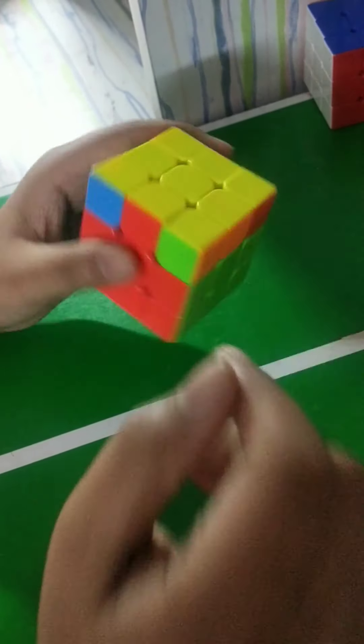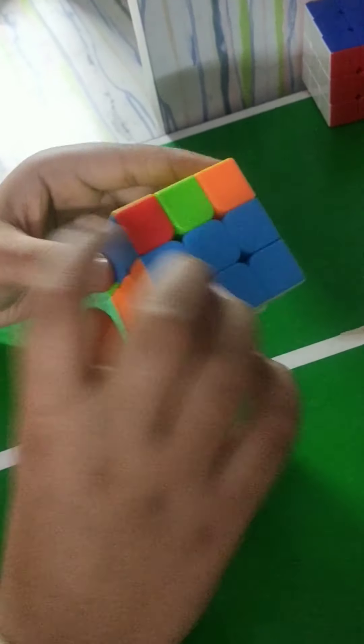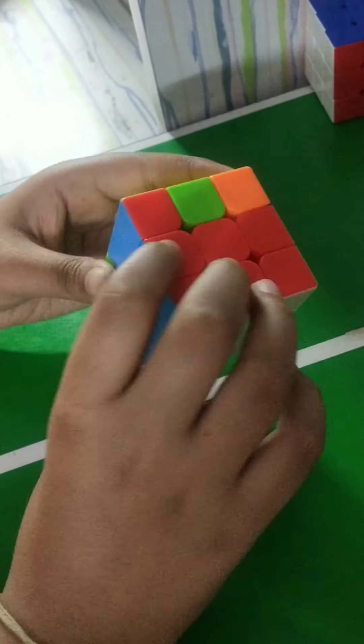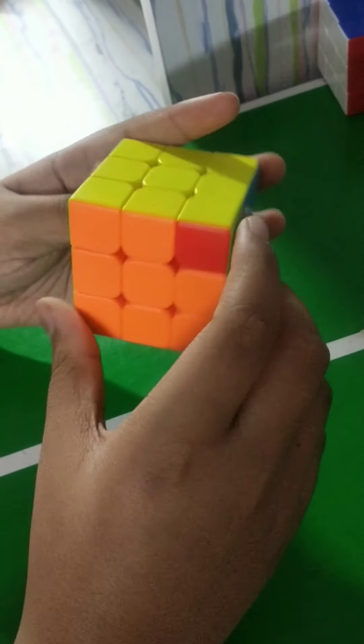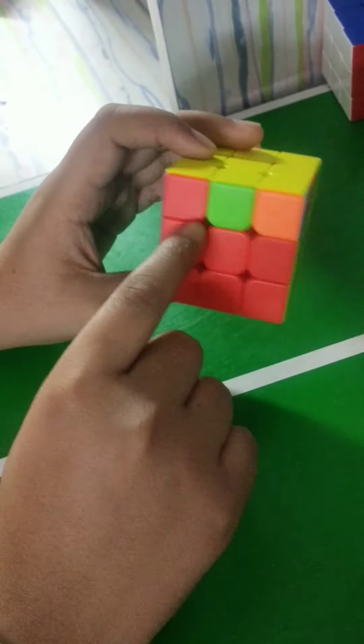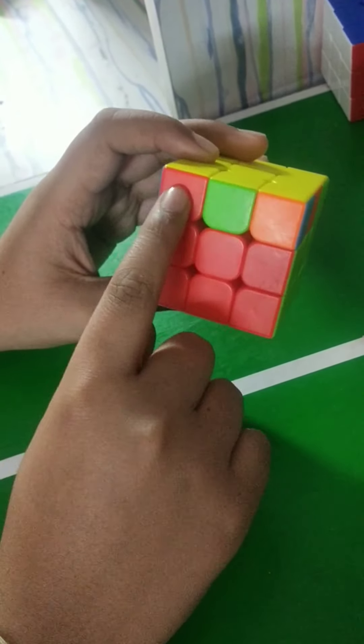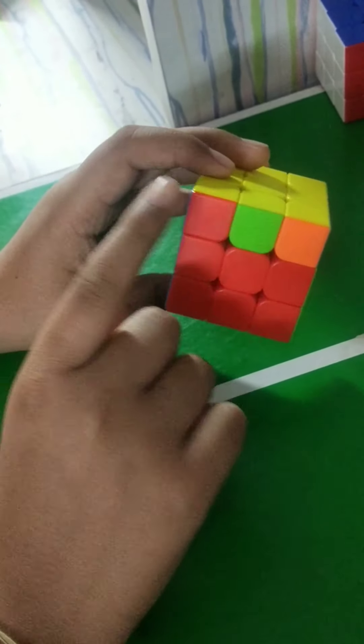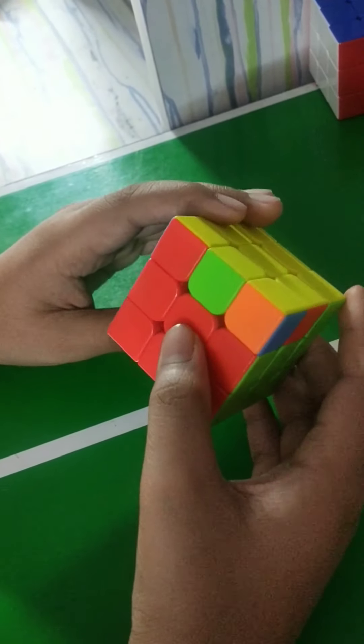There you go. Now time for the third layer. I've got this. So the first algorithm is take any side, yellow left part, like I've got this here, and do the following algorithm.